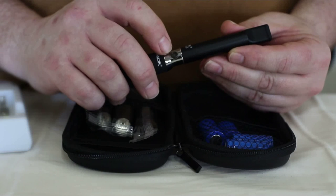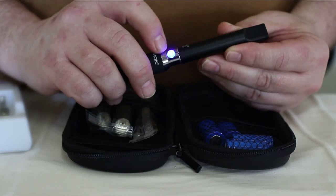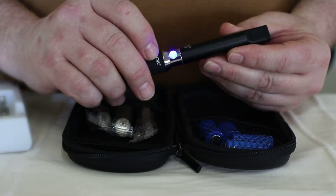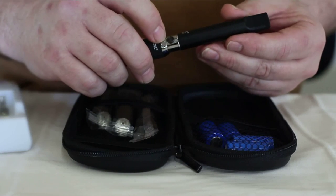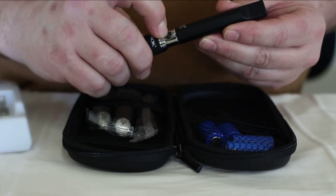A few more notes on the basic operation. To turn the device off, five clicks on the button in succession, and it will flash back at you five times. And the device is now off. Pushing the button does not activate the cartomizer. It does not light up.